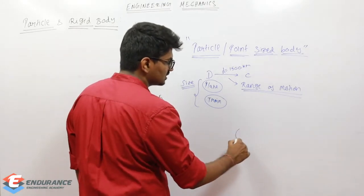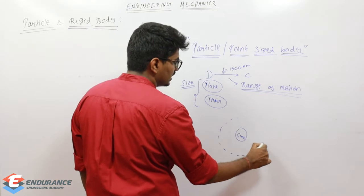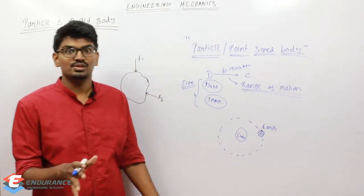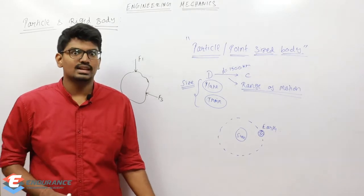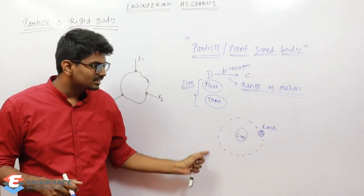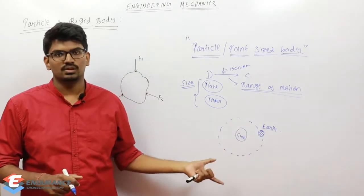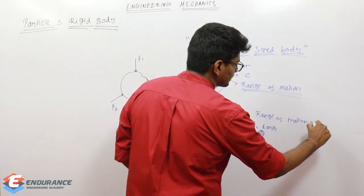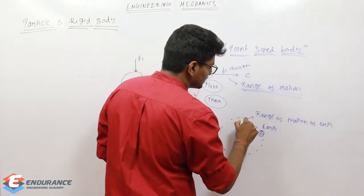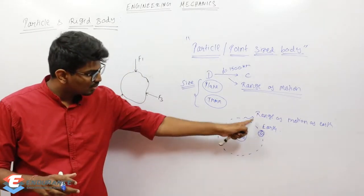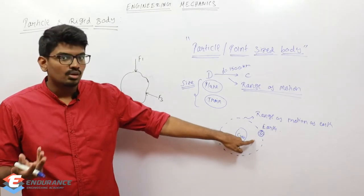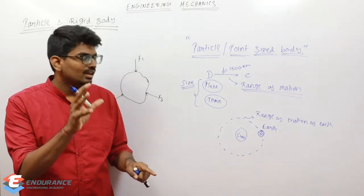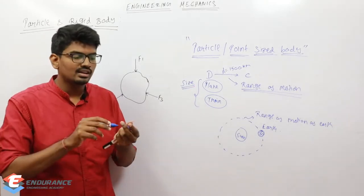Let us consider another example — the sun and the earth. Earth is revolving around the sun. We know that earth is very big. But the distance the earth is traveling to revolve around the sun is the range of motion of the earth. Now compare this total range with the size of the earth. Obviously, the size of the earth is going to be small compared to the range of its motion.